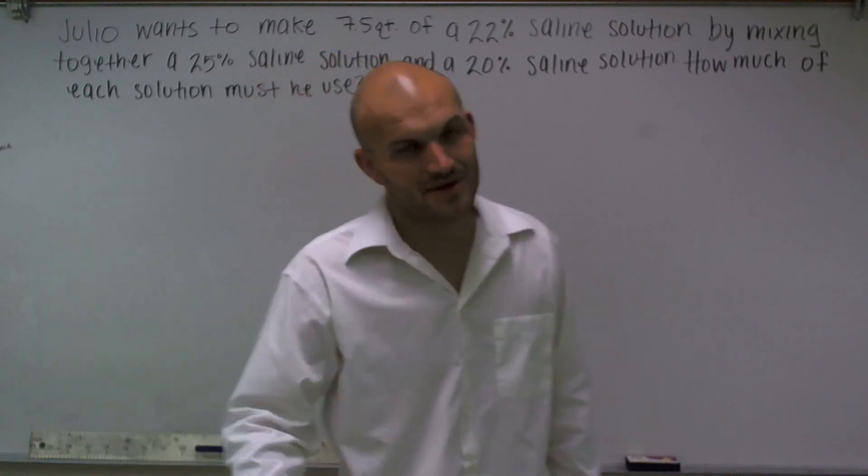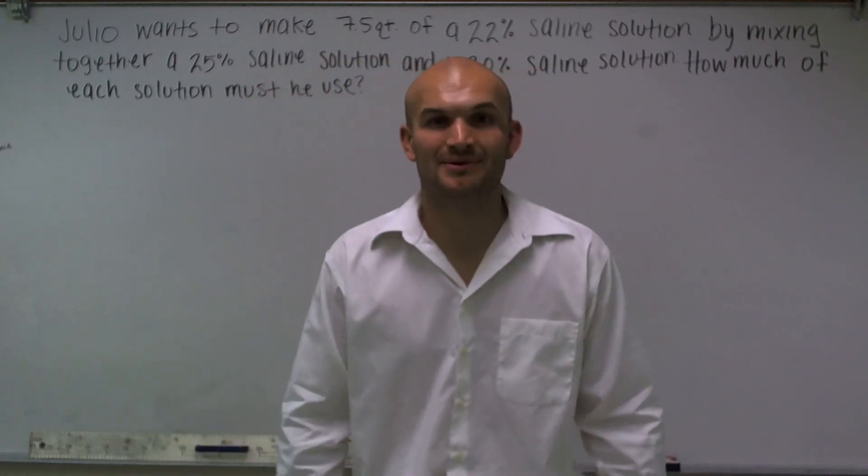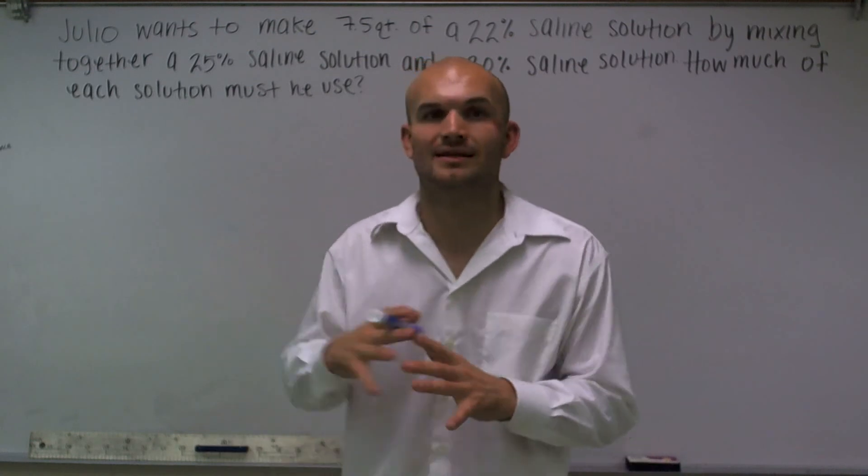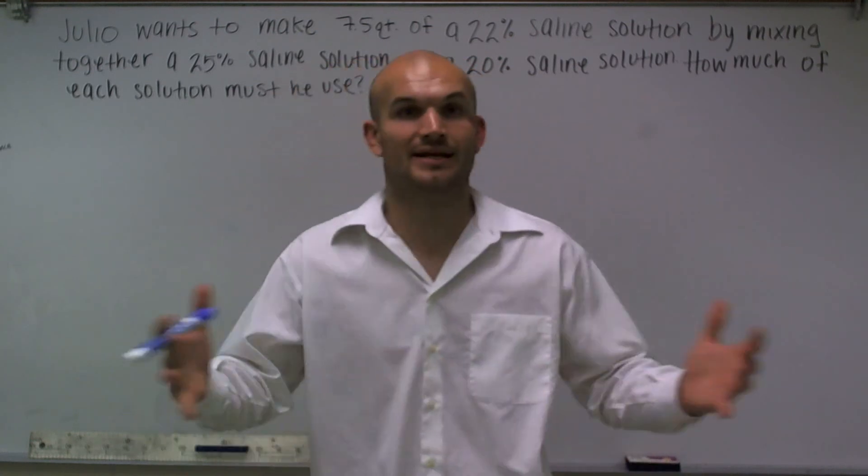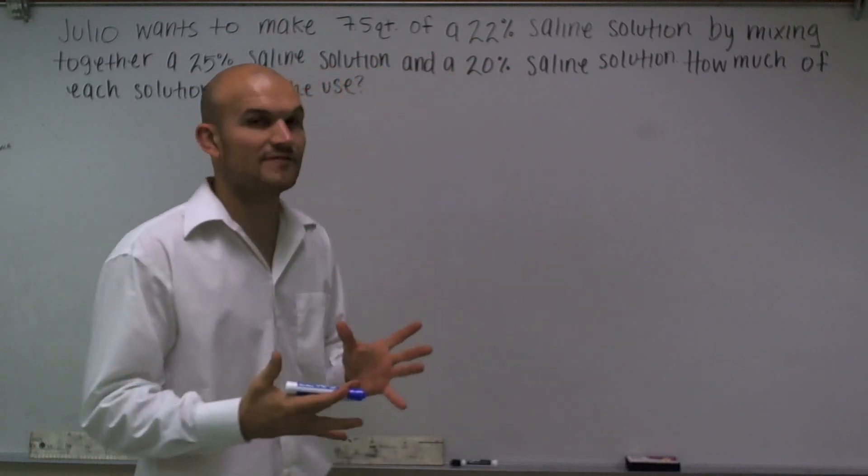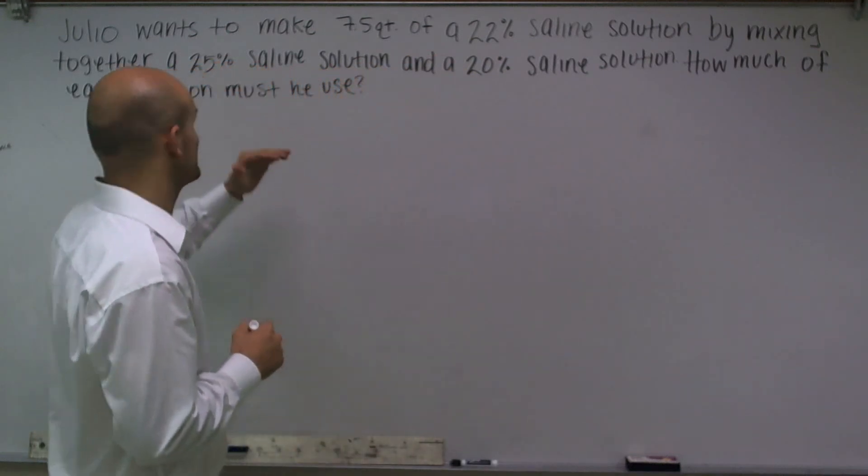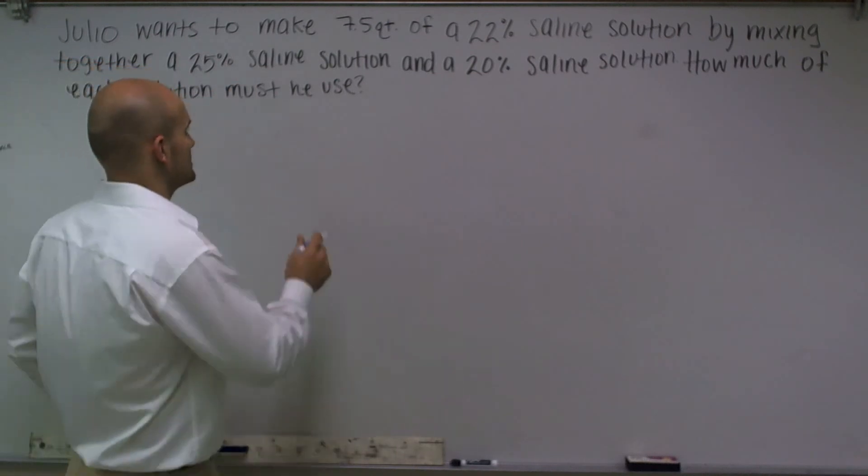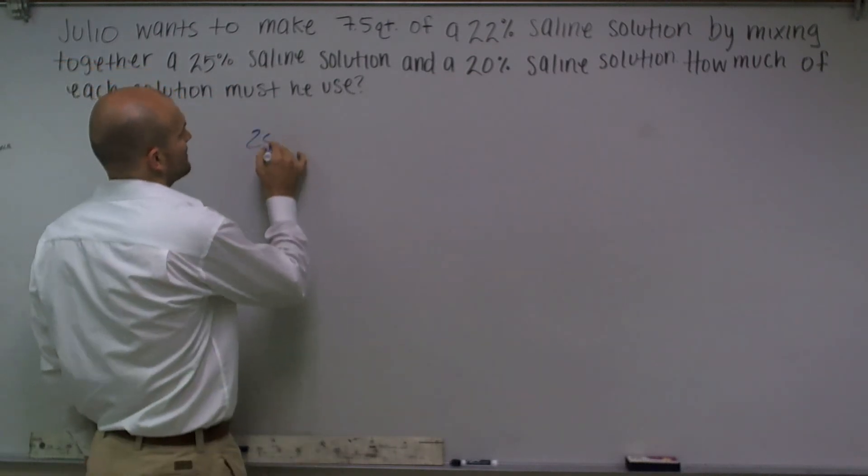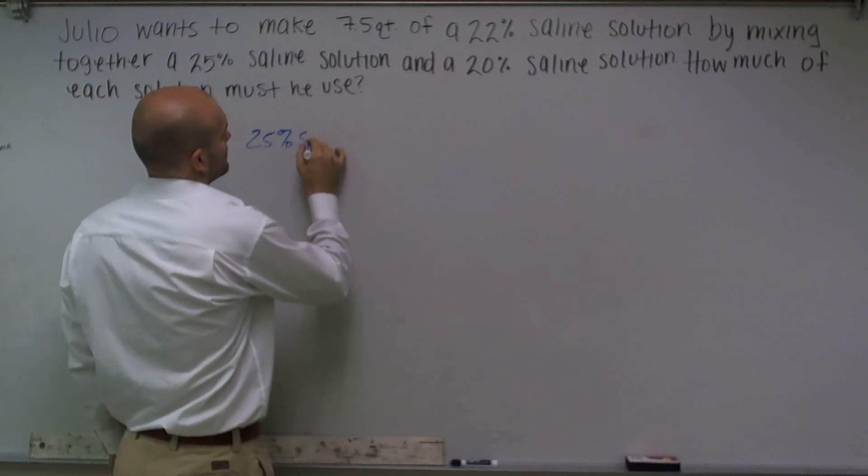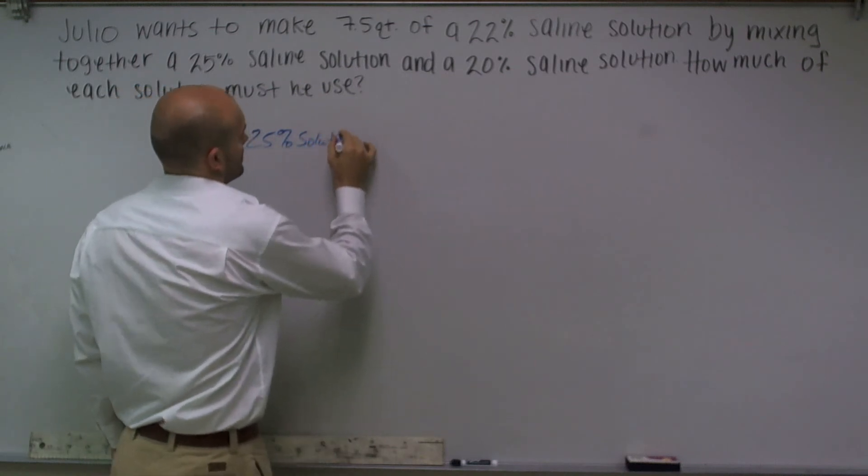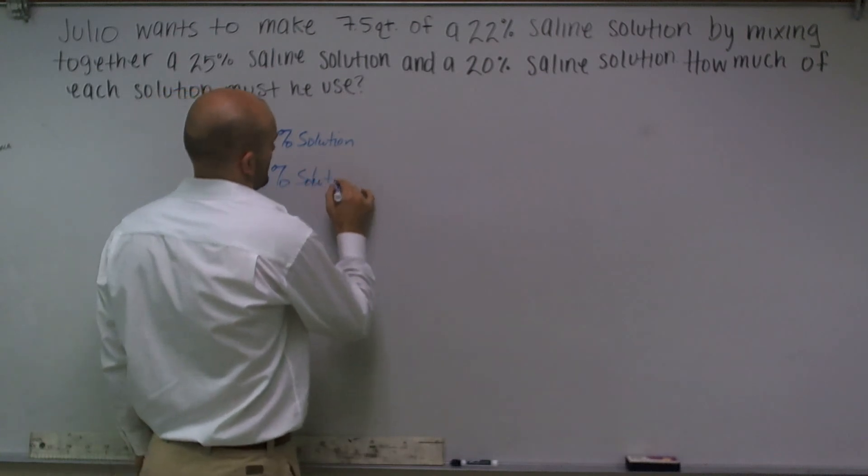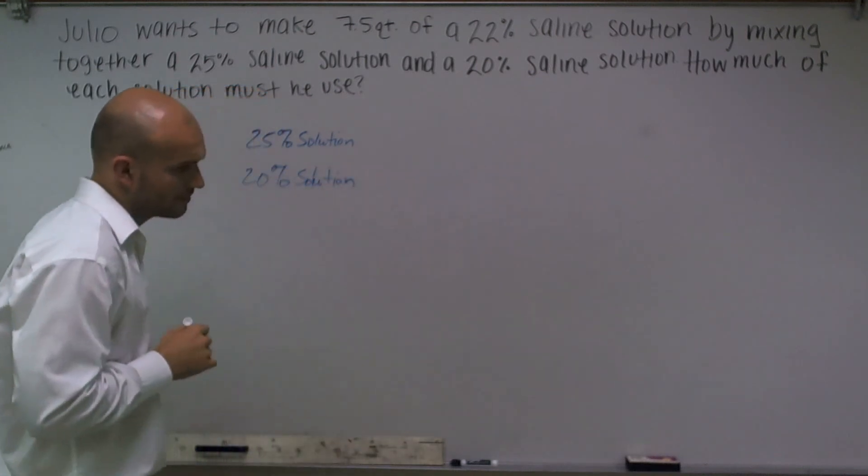Now, with all word problems, we've got to organize our stuff. Just by reading this, I think a lot of you will understand that it's just going to get confusing. So the main important thing is we've got to figure out a way to organize this. They said there's two types of solutions: a 25% and a 20%. So I'm just going to write here's the 25% and the 20%.